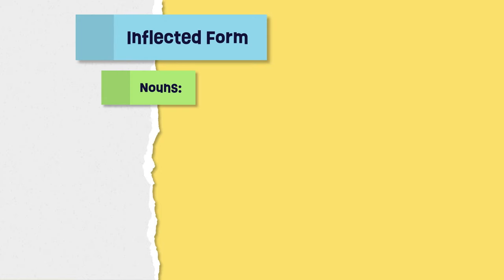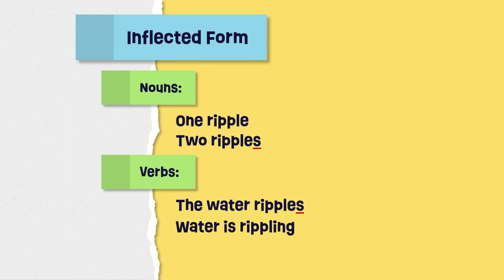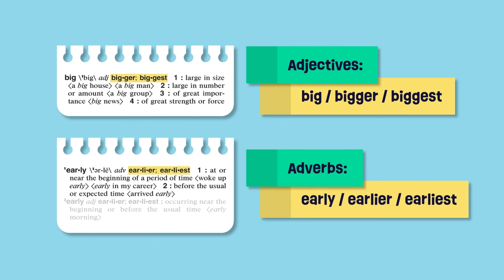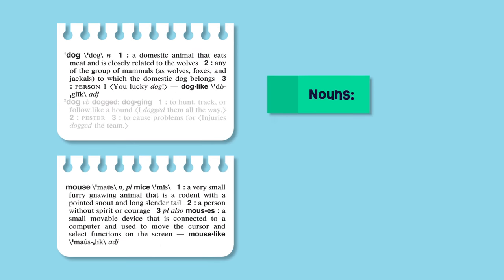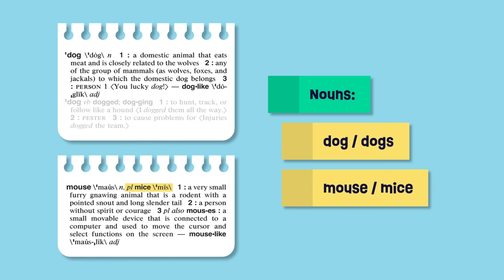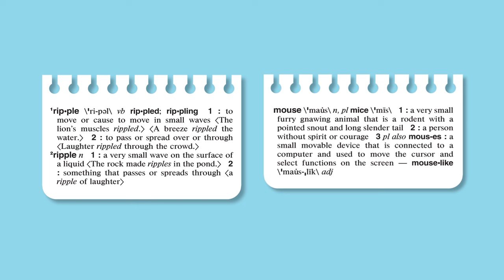Many words have more than one form. For example, most nouns have a plural form — one ripple, two ripples. Verbs can also have different forms: the water ripples, water is rippling, water rippled. Adjectives and adverbs can too. Your dictionary will always show you the verb forms and adjective and adverb forms, but it only shows forms for nouns when they don't follow the regular add s or es noun pattern. So there's no plural form at the entry for the noun ripple, but at the entry for mouse, you'll see the plural form mice.